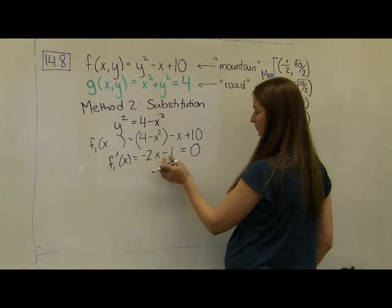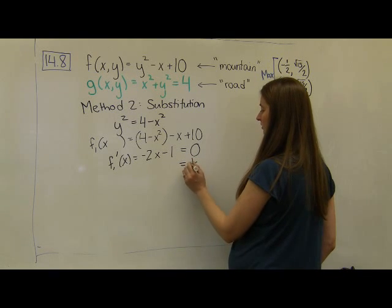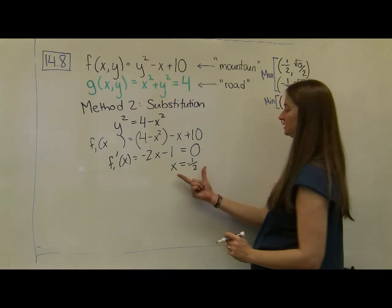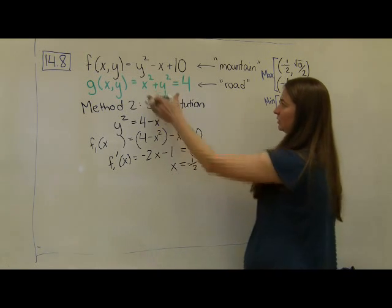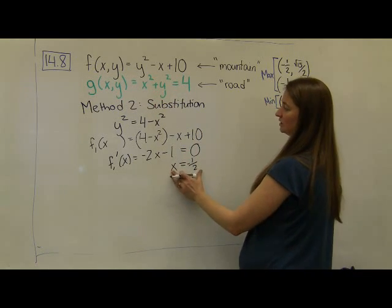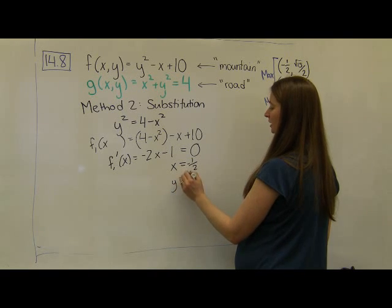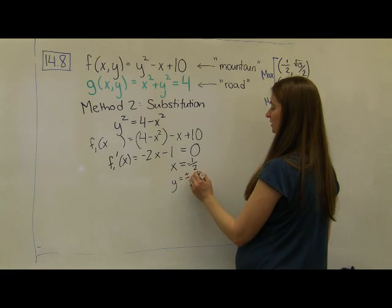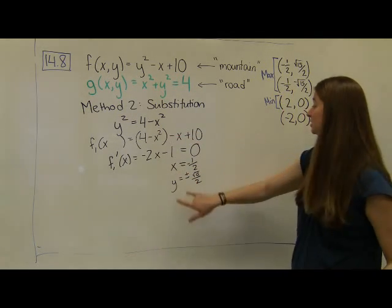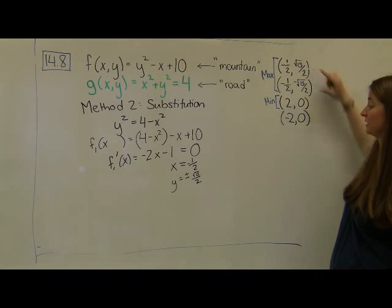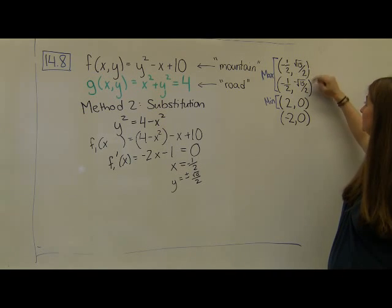The derivative of my f₁ function is going to be given by, the derivative of 4 is just 0, I get -2x - 1. I'm going to take my derivative, I'm just going to set it equal to 0. And when I do that, I see that I can add my 1 to this side and divide by negative 2 and I get that x equals -1/2. I can plug my x equals -1/2 back into my constraint function. I just need to solve because I used this relationship and I see that that means that y is equal to ±√15/2.